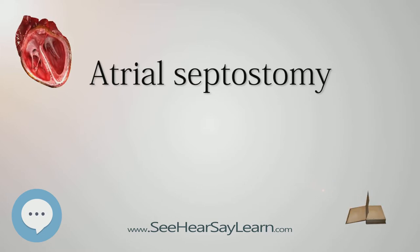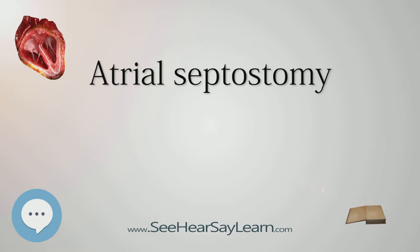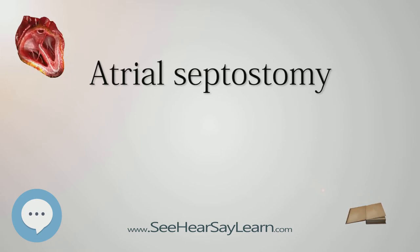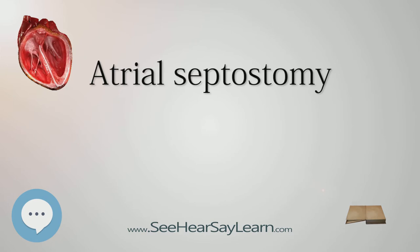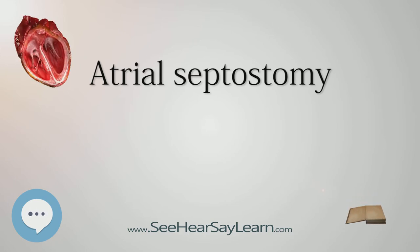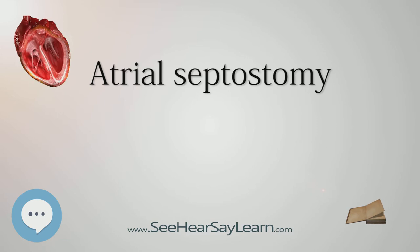The Rashkind balloon atrial septostomy is performed during cardiac catheterization, in which a balloon catheter is used to enlarge a patent foramen ovale (PFO) or atrial septal defect (ASD) in order to increase oxygen saturation in patients with cyanotic congenital heart defects (CHDs). It was developed in 1966 by American surgeons William Rashkind and William Miller at the Children's Hospital of Philadelphia.